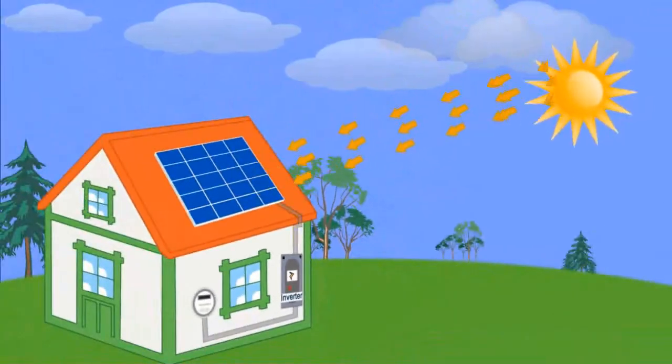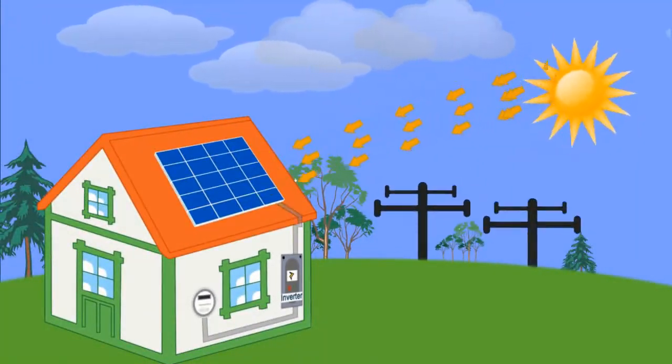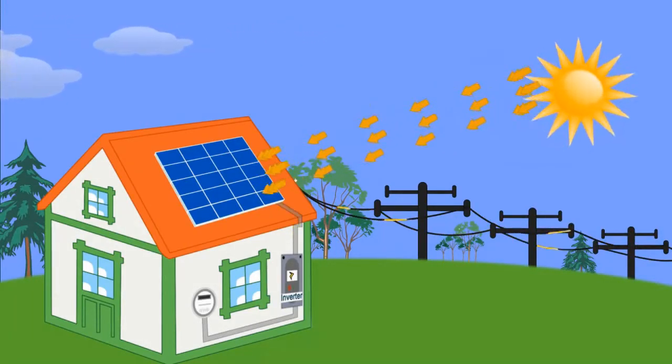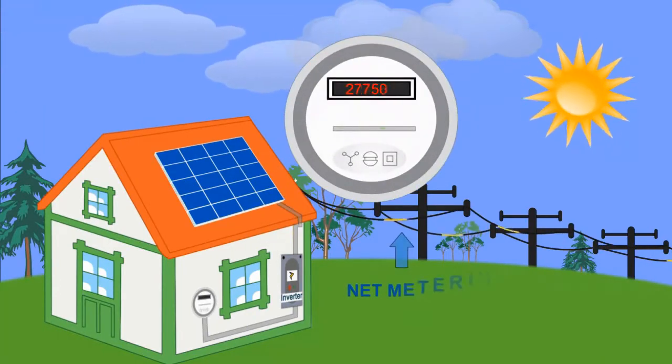What's even better, solar electric systems can produce more electricity than your home needs, and the extra you do not use goes back to your utility grid. This is called net metering, and you'll be able to enjoy watching your utility meter spin backwards.